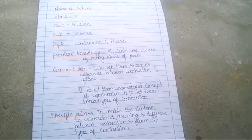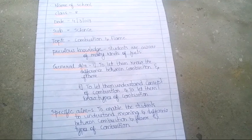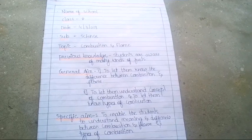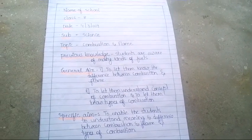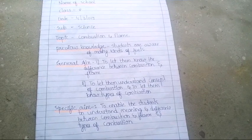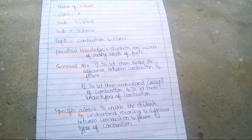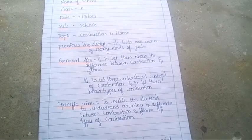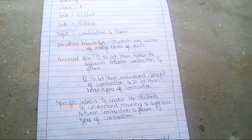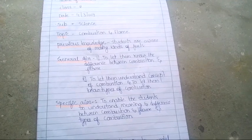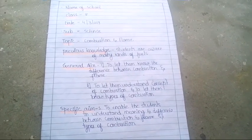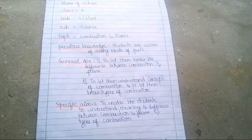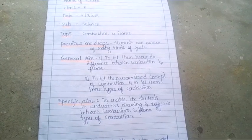In the general aim section, we have to write the purpose of our teaching — what we want to teach students. My purpose here is to let them know the difference between combustion and flame, to let them understand the concept of combustion, and to let them know the types of combustion, since there are many kinds of combustion we are going to teach.